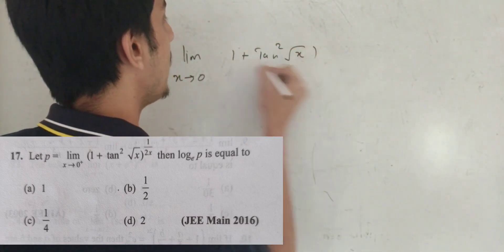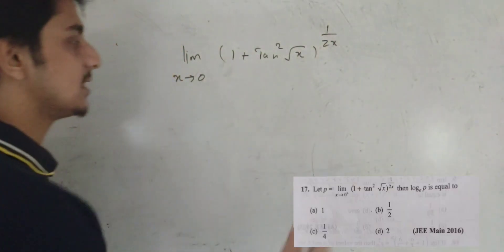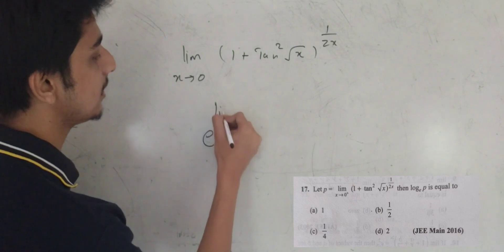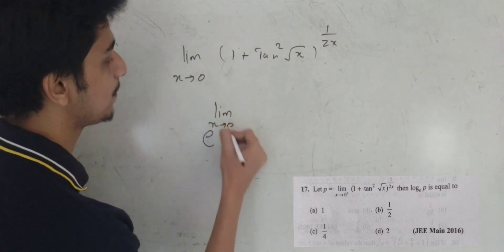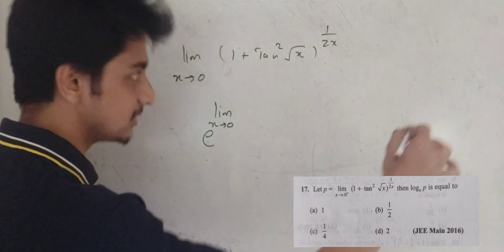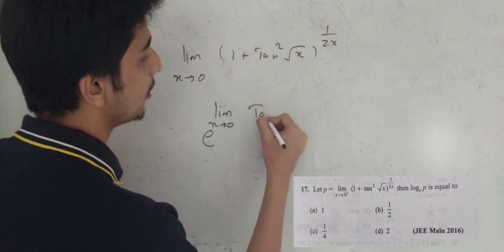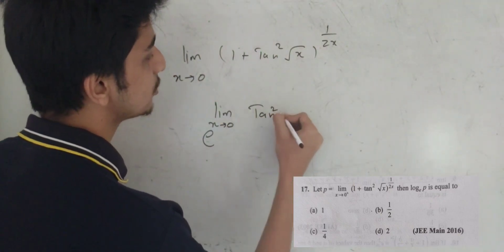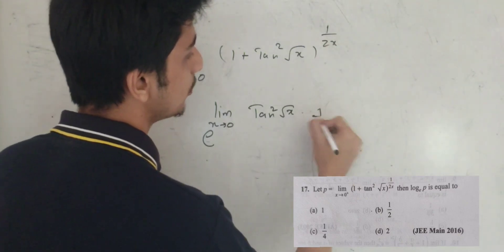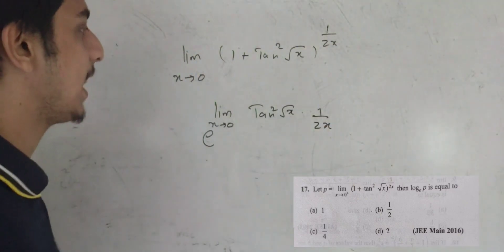The exponent is 1 by 2x. So this answer is e to the power of the limit as x tends to 0 of (1 + tan√x − 1), and then that minus 1 cancels with the 1, leaving tan√x, multiplied by 1 by 2x.